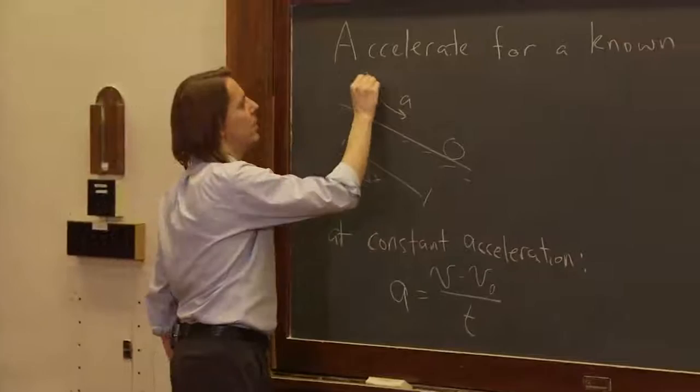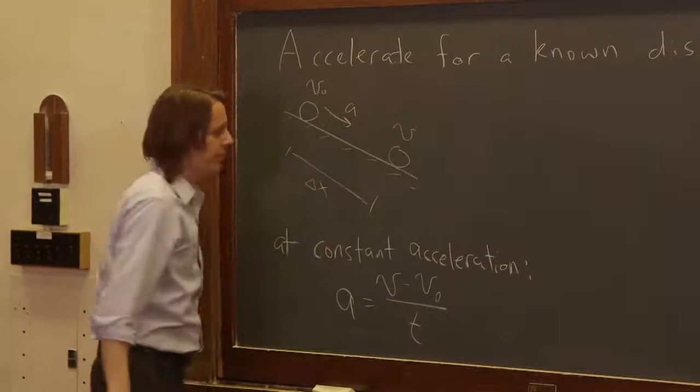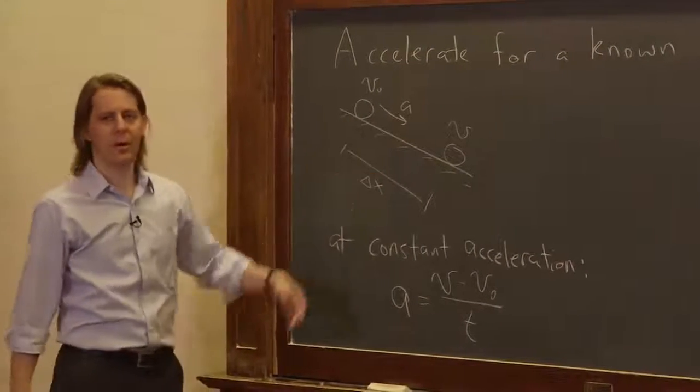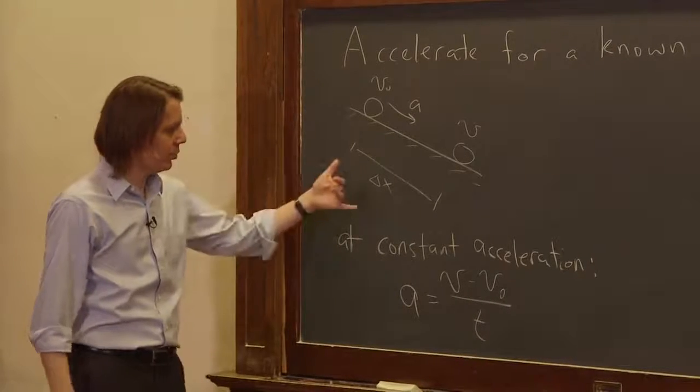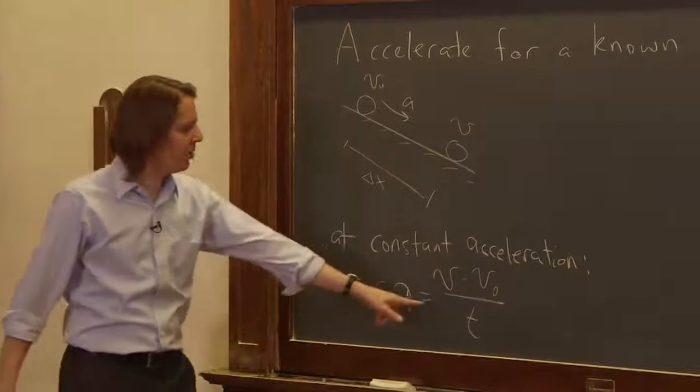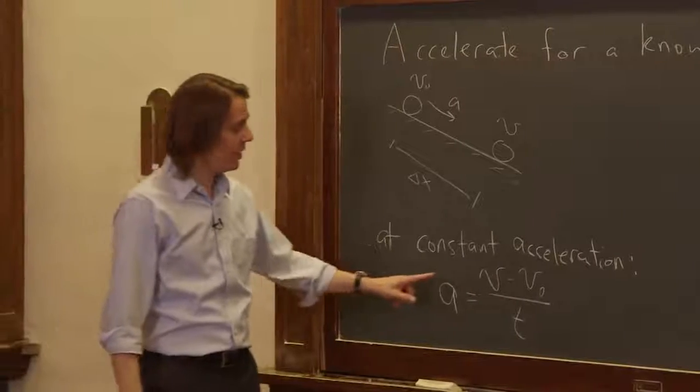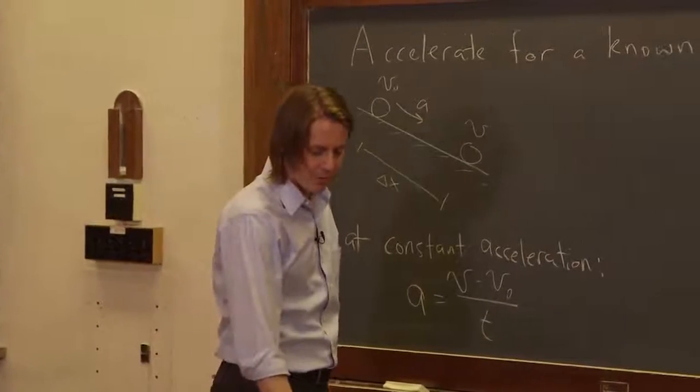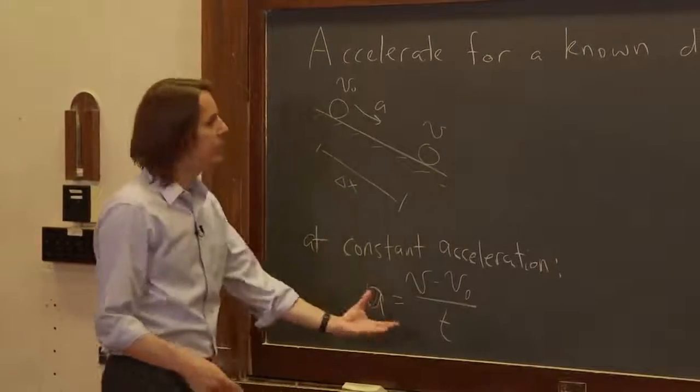So here it was at v-naught, here it got up to some v, faster value because it was accelerating. We only know delta x. So there's a problem, we don't know t. We know a, we don't know what the velocity did either.